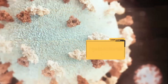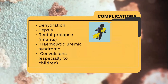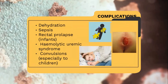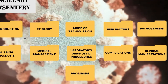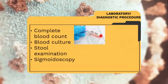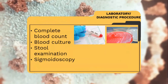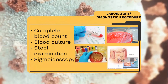The most common complication of bacillary dysentery is dehydration. Other complications include sepsis, rectal prolapse, hemolytic uremic syndrome, and convulsions especially in children. For laboratory diagnostic procedures, we have complete blood count to identify infection, blood and stool culture to determine the specific bacteria so it can be treated with a specific antibiotic. We also have sigmoidoscopy to examine and diagnose certain conditions in the lower colon, including polyps, tumors, ulcers, and inflammation or swelling.